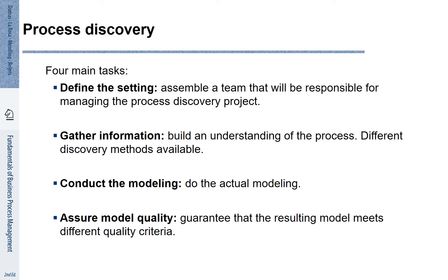Then, we need to arrange this information in a systematic way — this is the task of modeling. When conducting the modeling step, we also need to take into account quality assurance. Quality assurance guarantees that the resulting model meets different quality criteria. Many of these steps are iterative, meaning we may jump back and forth between gathering information, modeling, and quality assurance. In particular, the two steps of modeling and quality assurance are deeply intertwined.